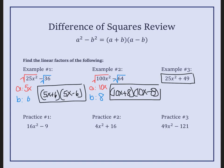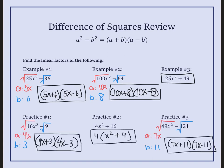Go ahead and pause this video and try practice numbers 1, 2, and 3 on your own. Check how you did. For the first one, we took the square root of each term and it factors to a sum and a difference. The second was tricky — just like the last example, it wasn't factorable by difference of squares alone. The key is to always take out the greatest common factor first. What goes into 4 and 16? I had to factor out a 4. When I was left with what remained, I didn't have a minus sign, so it's not a difference of squares. Take the square root of both of them for the third — one sum, one difference.